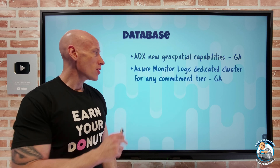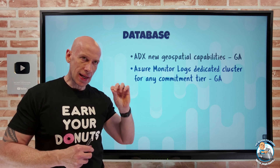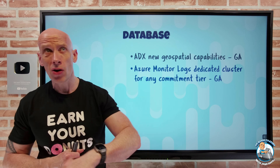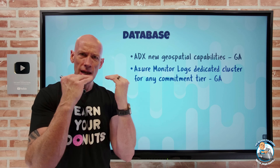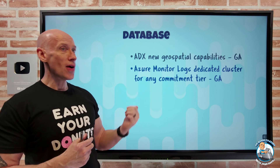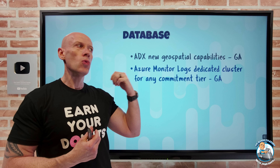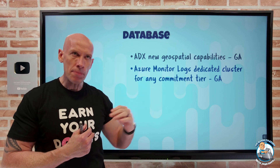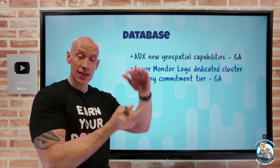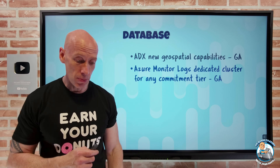Azure Monitor Logs dedicated cluster is now available for any commitment tier. The dedicated cluster adds functionality like AZ support, double encryption, customer managed key, and customer lockbox. Previously, I think it was a 500 gigabyte commitment tier minimum, but now it's as low as 100 gigabytes. If I have multiple workspaces none big enough to hit a commitment tier, I can now create a dedicated cluster, move my workspaces into it, and buy a commitment tier for the sum of all workspace space — a nice option to save money.